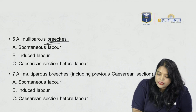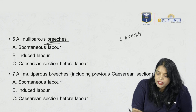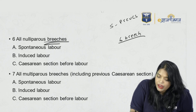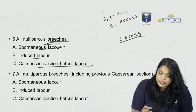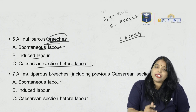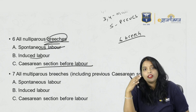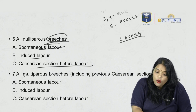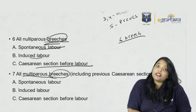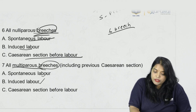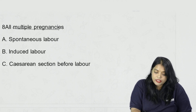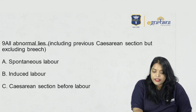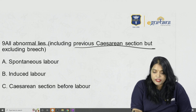Group 6 is all nulliparas with breech presentation — A: spontaneous, B: induced, C: cesarean section before labor. Group 7 is all multiparas with breech, including previous cesarean section — again A, B, C. Group 8 is all multiple pregnancies — spontaneous, induced, and cesarean section before labor. Group 9 is all abnormal lies — transverse, oblique — excluding breech, which falls under groups 6 and 7.